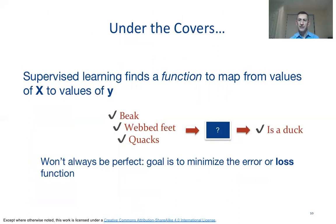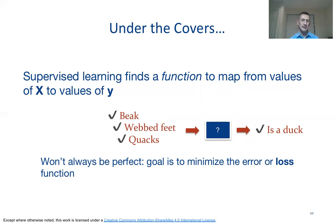Let's talk about what's happening under the covers as we talk about training and learning in a supervised manner. We have certain features described in our matrix X, and corresponding class values Y. What we're trying to do is define a function that will appropriately map the values in the feature matrix to the class variable Y. For example, if we see an object which has a beak, webbed feet, and quacks, then it maps to the class value 'is a duck.' And if it doesn't have a beak, doesn't have webbed feet, and doesn't quack, most likely it's not going to be a duck.